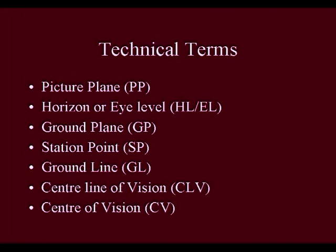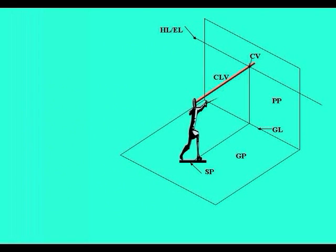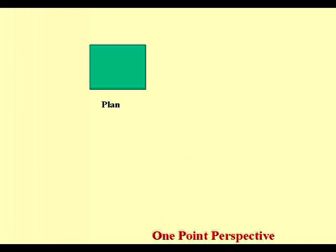To put it in a pictorial form, you have the picture plane PP, which is perpendicular to the person standing. You have the ground plane on which the person is standing, the station point on which the person is exactly standing. From there, you have rays drawn from the eyes to the eye level. If you draw straightly and cut it at the eye level, you will be finding that the center line vision would be there and the center of vision would be drawn.